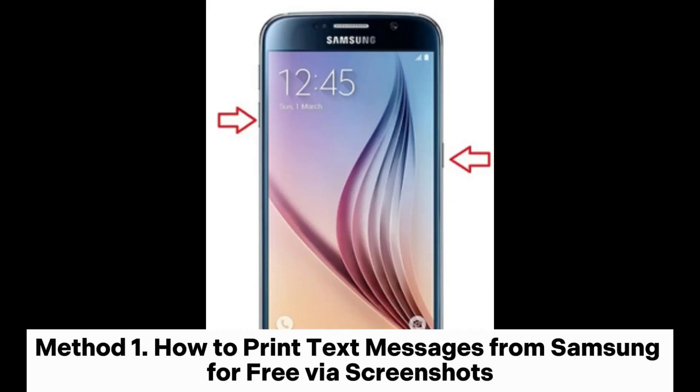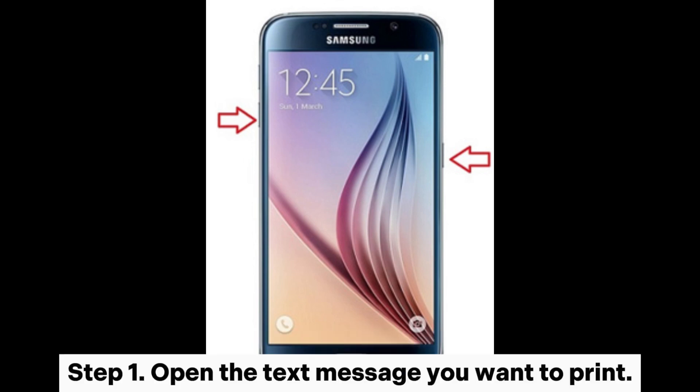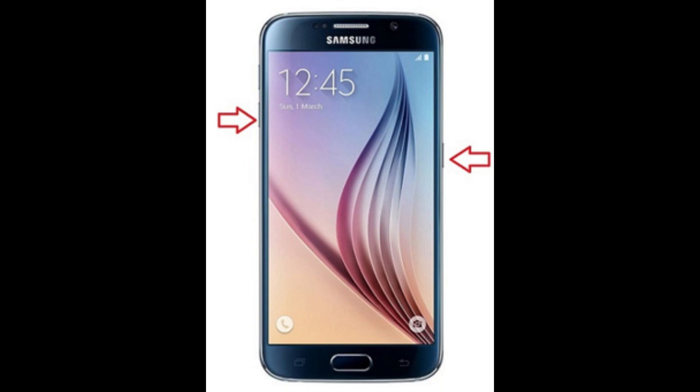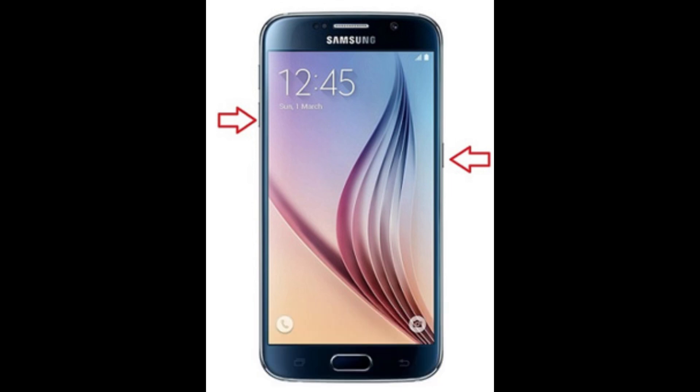Method 1: How to print text messages from Samsung for free via screenshots. Step 1: Open the text message you want to print. Step 2: Capture a screenshot on your device by simultaneously pressing the power button and the volume down button.